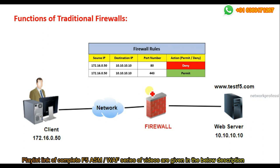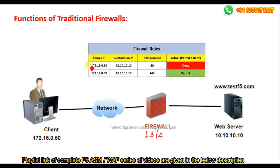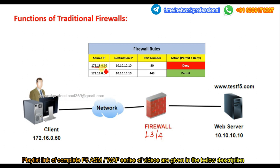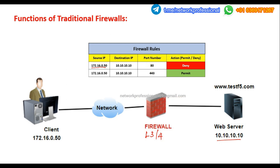What are the functions of a firewall? When it comes to a traditional firewall, it works on layer 3 and layer 4. Generally, rules are set up. For example, from a particular source to a particular destination, if traffic comes using a particular destination port number, what action should be performed? There are two kinds of actions: deny or permit the request. A simple rule says that when source IP 172.16.0.50 sends traffic to destination 10.10.10.10 using port 80 (HTTP traffic), just deny it.